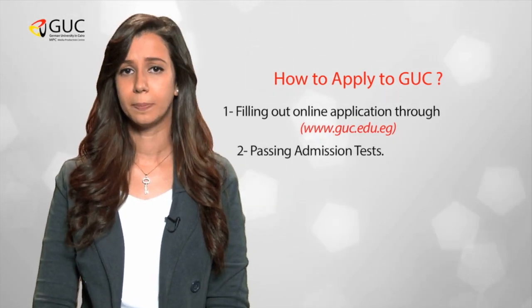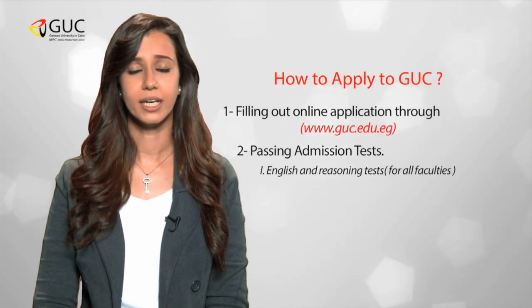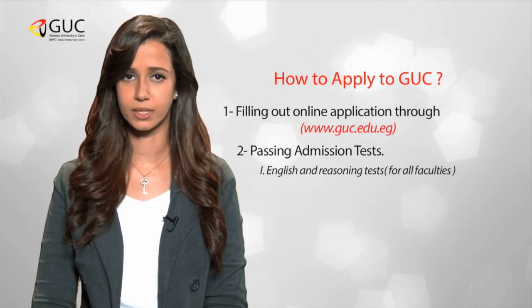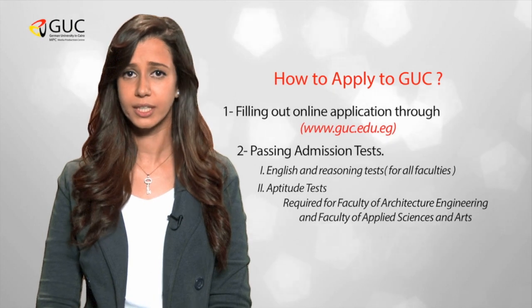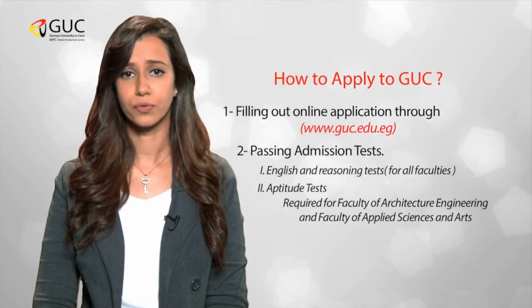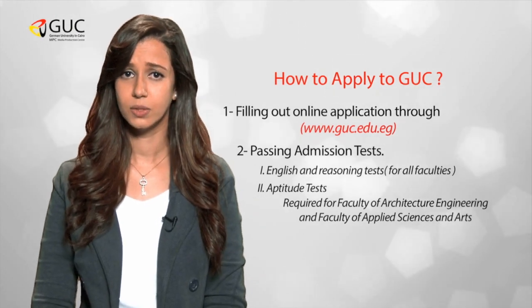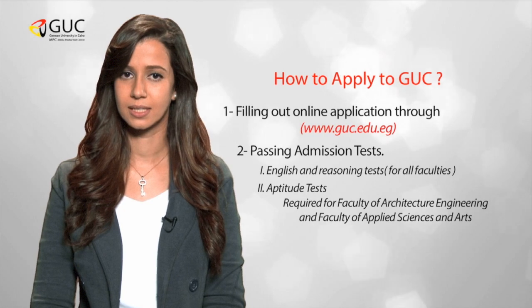Next, you need to pass the admission tests. These are English and reasoning tests for all faculties. If you're applying for Architecture or the Faculty of Applied Sciences and Arts, you also need to pass the aptitude test.